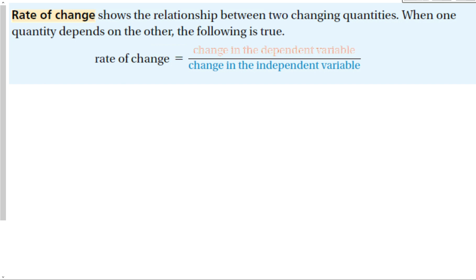The definition of rate of change is that it shows the relationship between two changing quantities. When one quantity depends on the other, the rate of change is equal to the change in the dependent variable over the change in the independent variable. To use the rate of change, we need to know which variable is dependent, which is independent, which is the x value, and which is the y value.